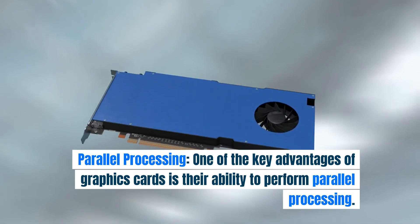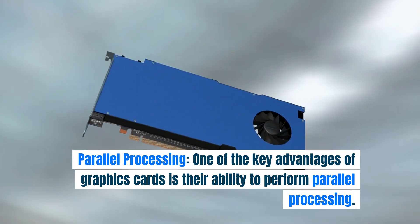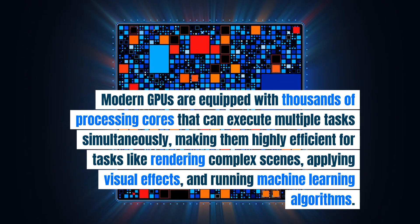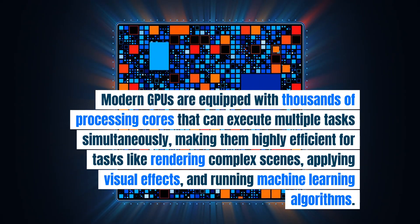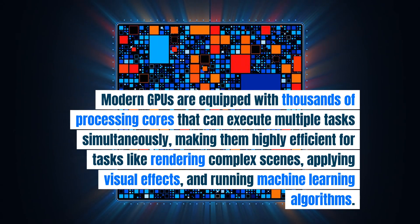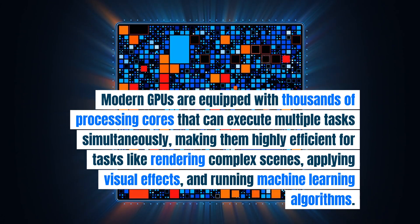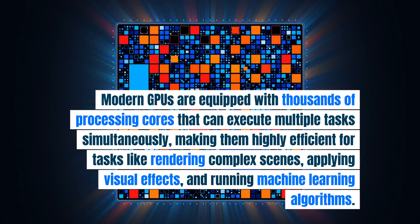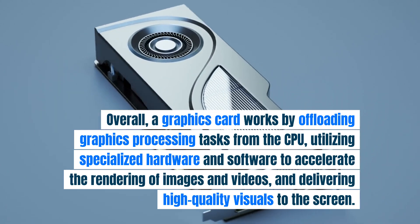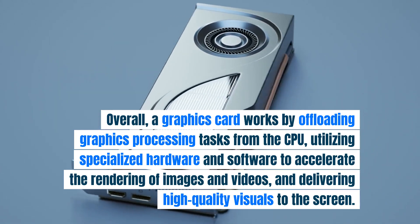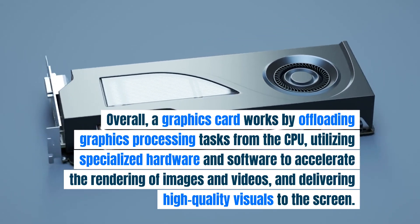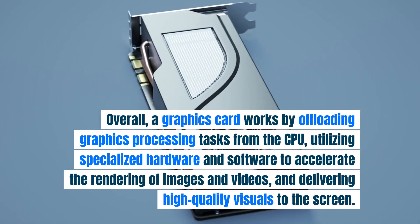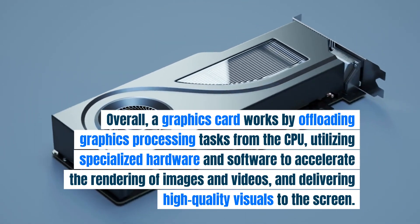Parallel Processing: one of the key advantages of graphics cards is their ability to perform parallel processing. Modern GPUs are equipped with thousands of processing cores that can execute multiple tasks simultaneously, making them highly efficient for tasks like rendering complex scenes, applying visual effects, and running machine learning algorithms. Overall, a graphics card works by offloading graphics processing tasks from the CPU, utilizing specialized hardware and software to accelerate the rendering of images and videos, and delivering high-quality visuals to the screen.